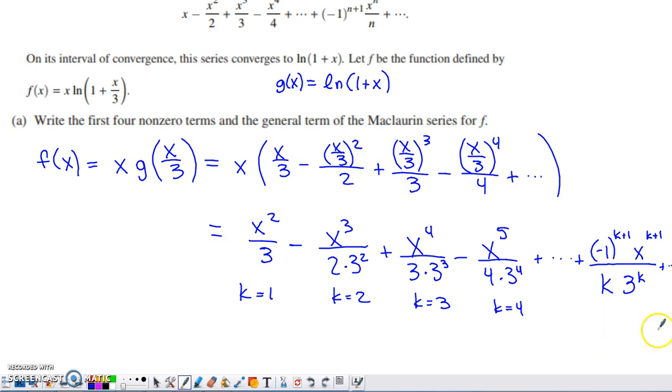The power on 3 within the denominator corresponds directly to what the index is. You see that across all of the terms. So here are your first four non-zero terms, and there is your general term.